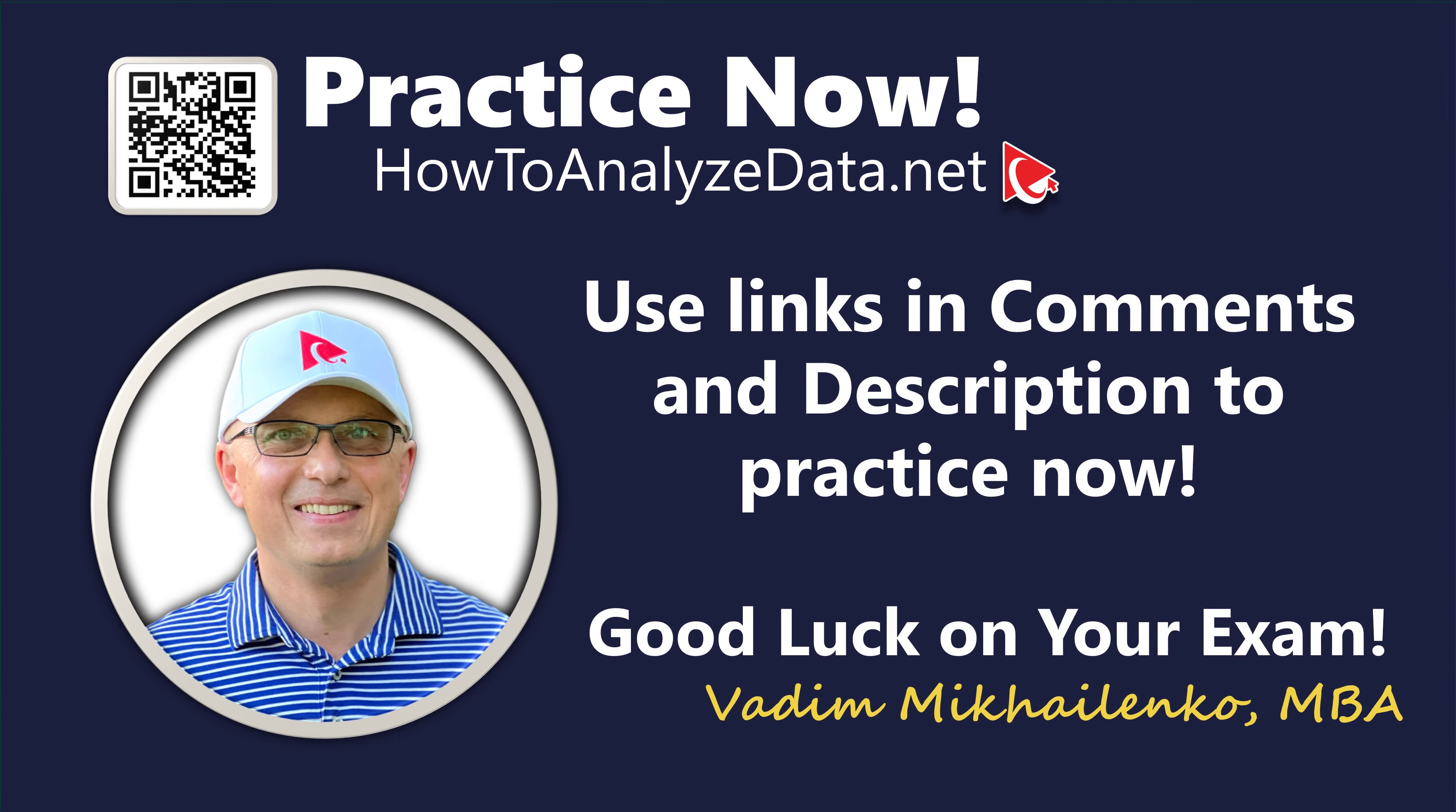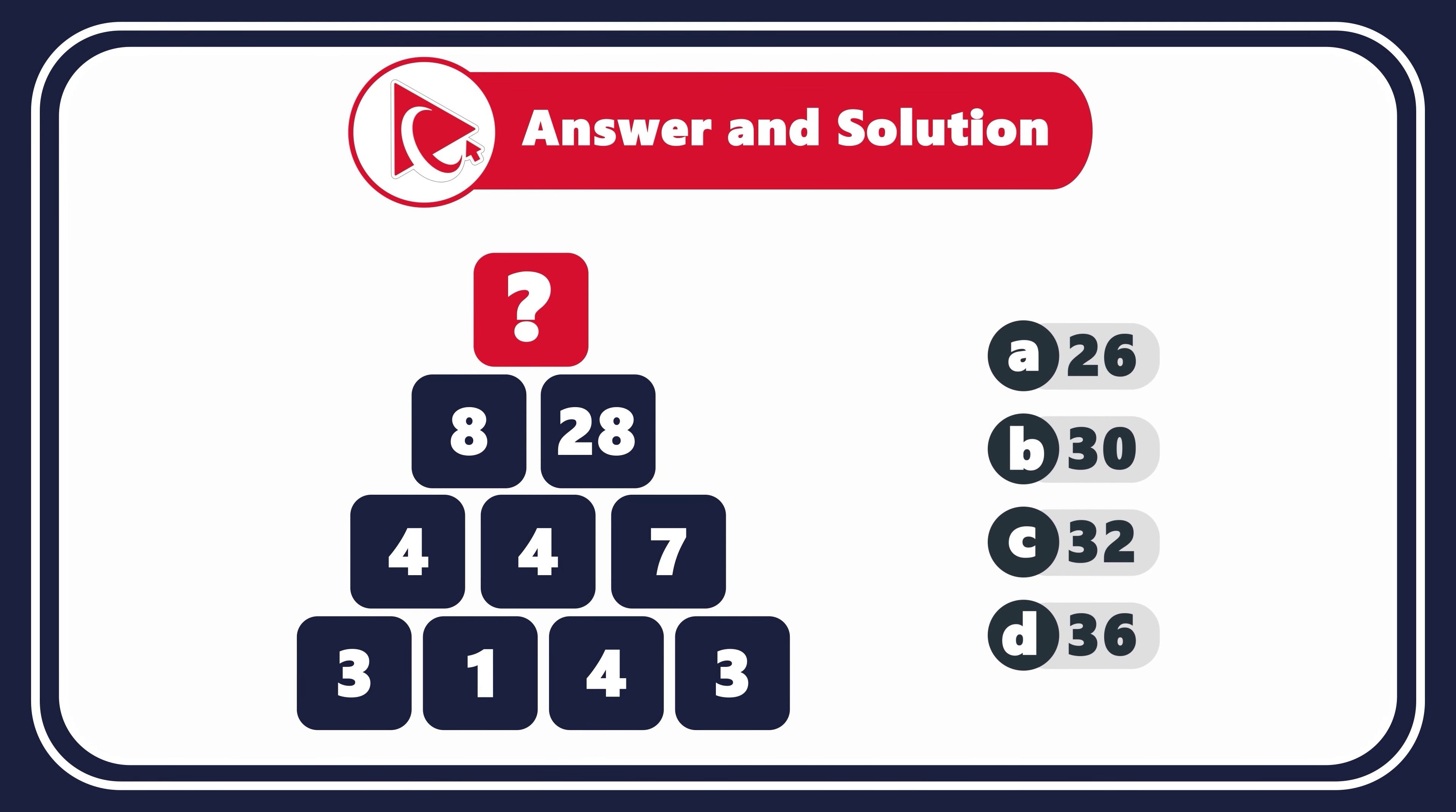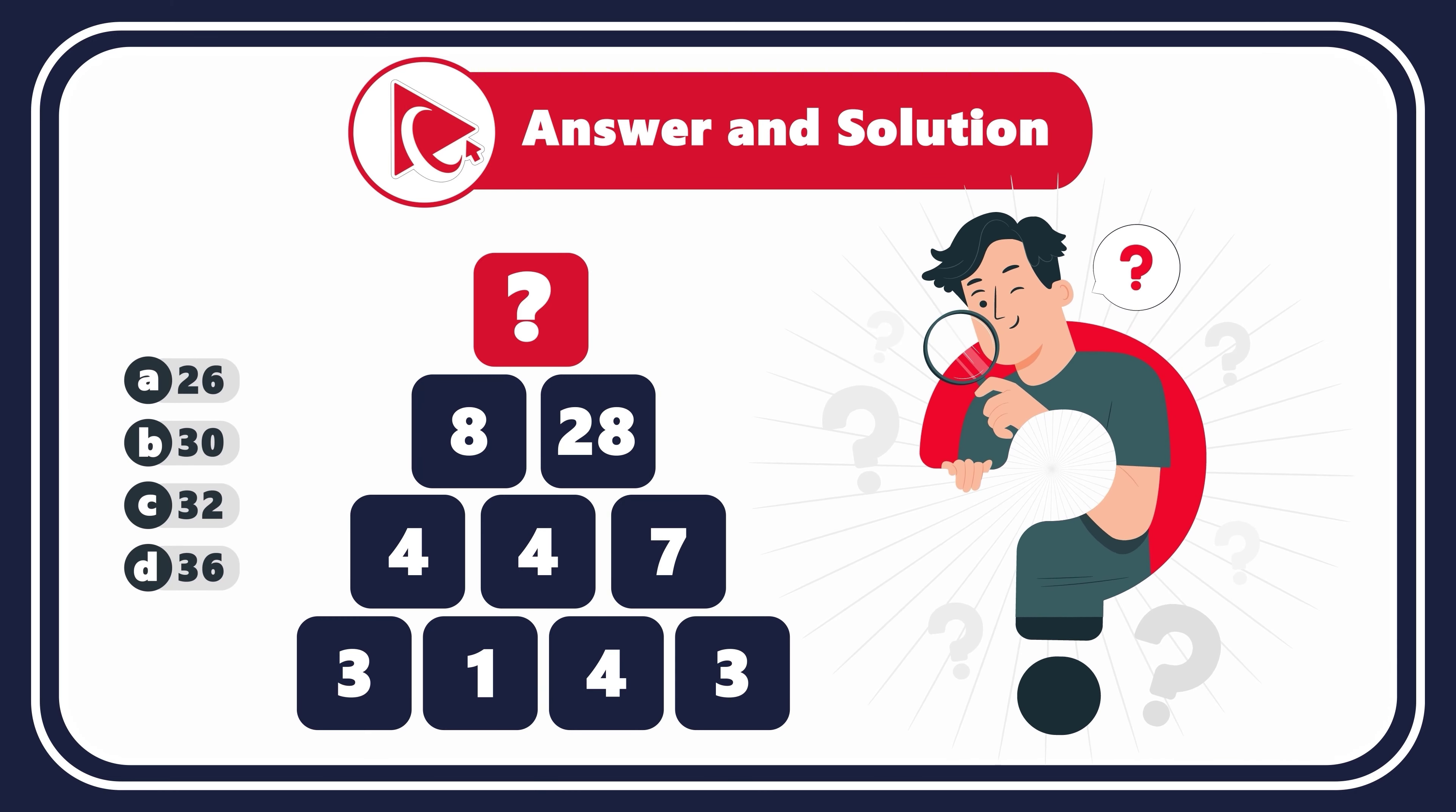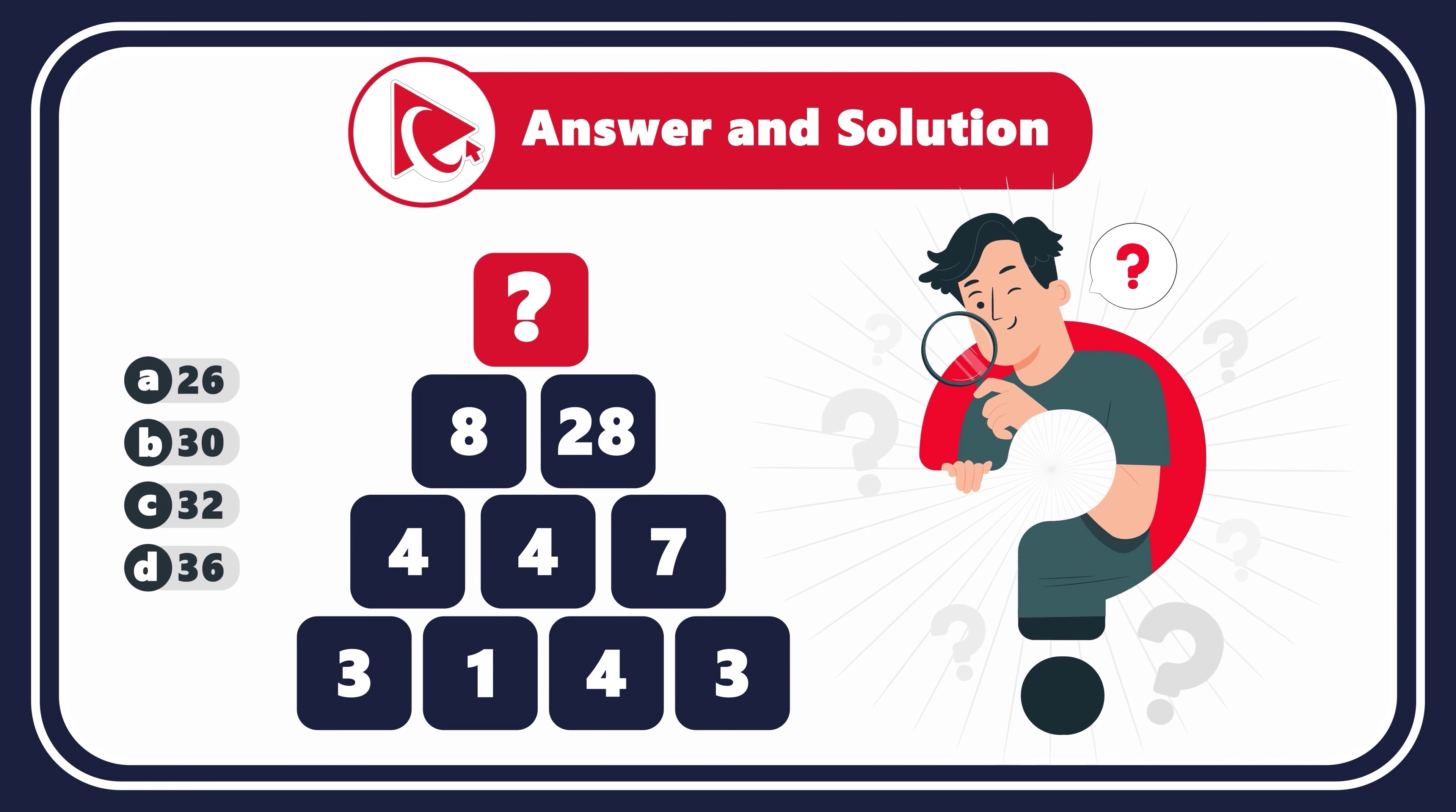Prepare to tackle this intriguing assessment test question, designed to foster your analytical skills. You need to determine the missing number, which is located on the top of the pyramid. The other numbers in the pyramid are 8 and 28 in the second row, 4, 4, and 7 in the third row, and 3, 1, 4, and 3 in the fourth row. You need to calculate the missing number and select it out of four possible choices. Let me give you a hint. Consider that I might be trying to mislead you by the way I present the information.